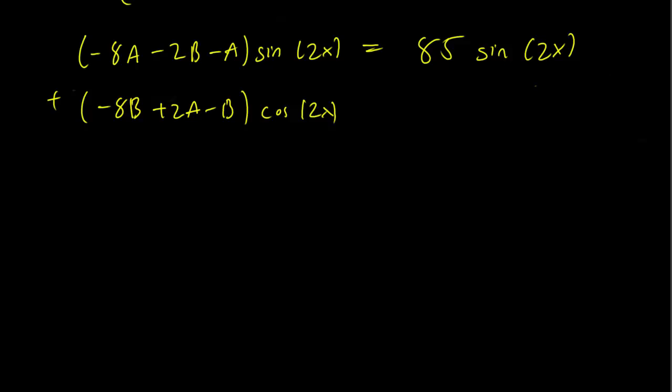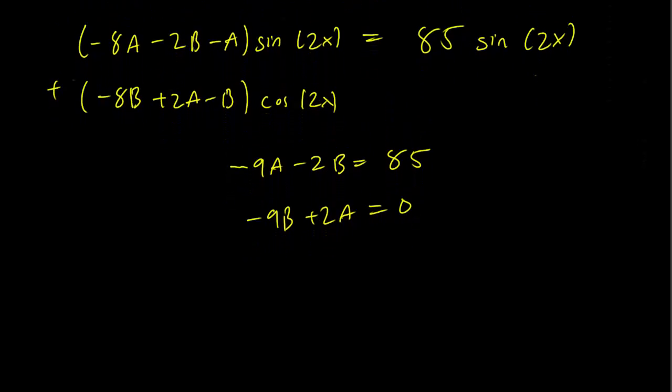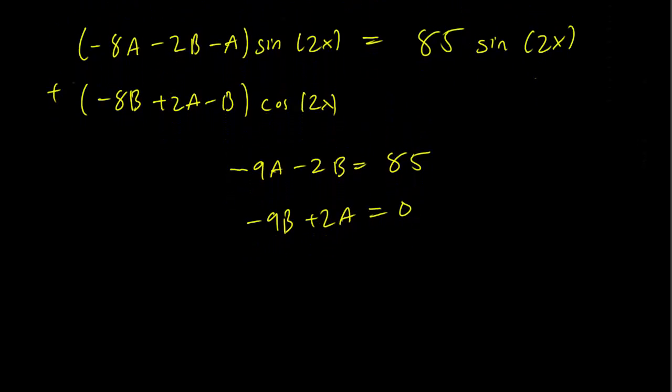This is an equation we can solve. So we have minus 9A minus 2B equals 85. And we have minus 9B plus 2A equals 0, since there's no cosine term on the right. So the second equation, we get that A is going to be equal to 9 over 2 times B.